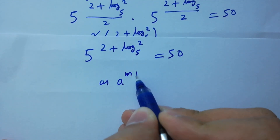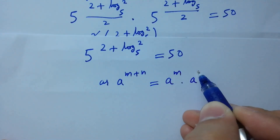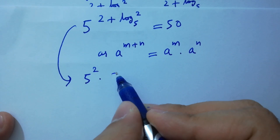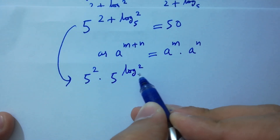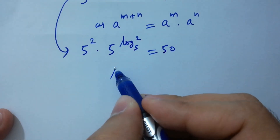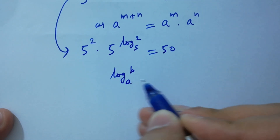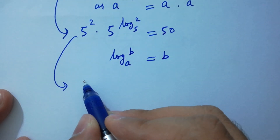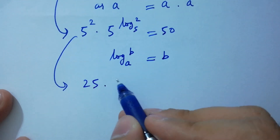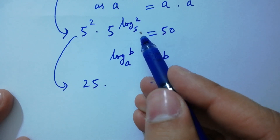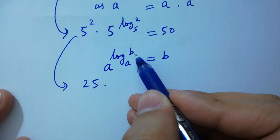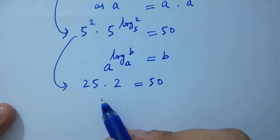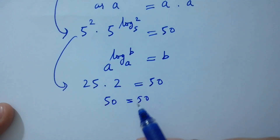Using the rule a to the power m+n equals a to the power m times a to the power n, we have 5 squared times 5 to the power log 2 to the base 5 equals 50. Using the identity a to the power log b to the base a equals b, this becomes 25 times 2 equals 50. So 50 equals 50 — left hand side equals right hand side, which confirms it satisfies the equation.